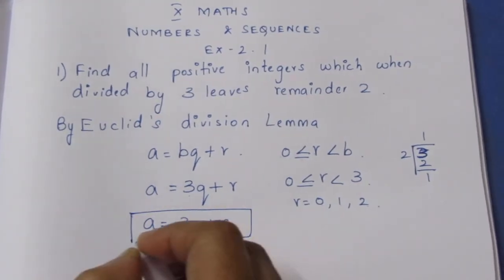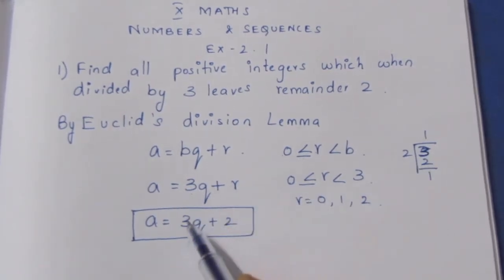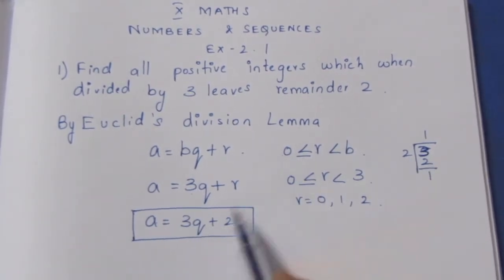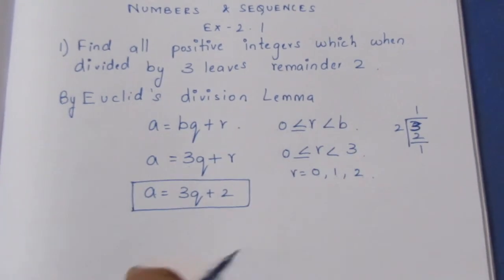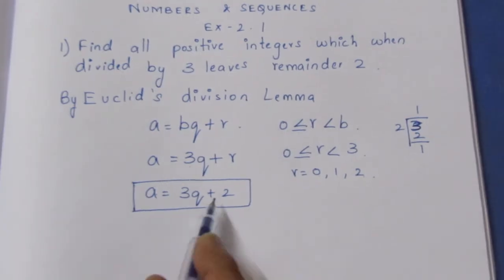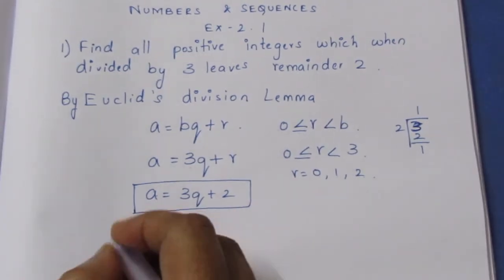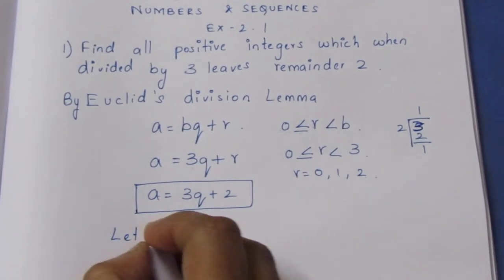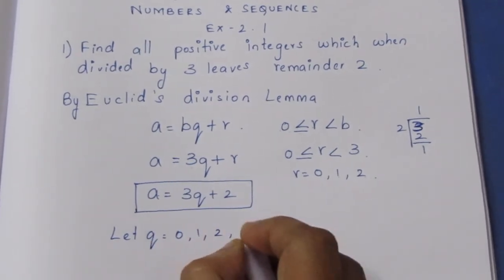This is the equation: a equals 3q plus 2, where a is the dividend, q is the quotient, and 2 is the remainder. Now we substitute values for q: q equals 0, 1, 2, 3, and so on.